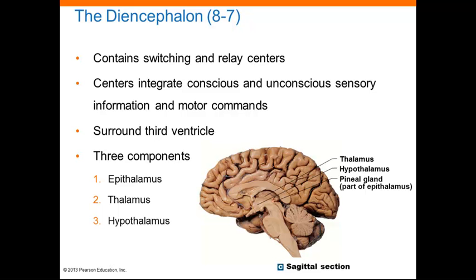The hypothalamus lies inferior to the third ventricle. The subconscious control of skeletal muscle contractions is associated with strong emotion, and the hypothalamus coordinates the nervous and endocrine systems by secreting hormones, producing sensations of thirst and hunger, and coordinating voluntary and ANS function. It regulates body temperature and even coordinates your daily cycles.